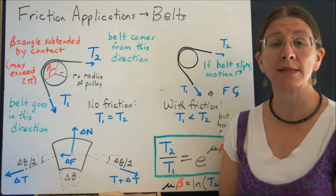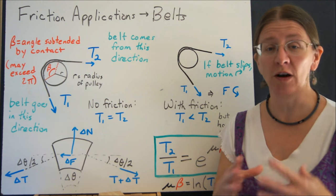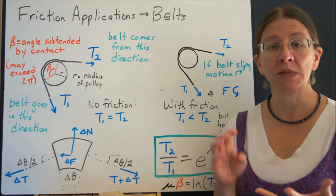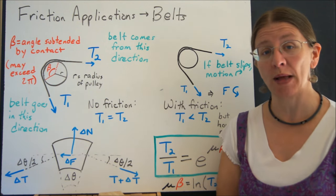Our next friction application is for belts. This is a situation like all the rest of our equilibrium problems for rigid bodies. We're going to read the problem, draw the free body diagrams, and then consider what other equations we have. In this case, we'll get one more equation for belts.